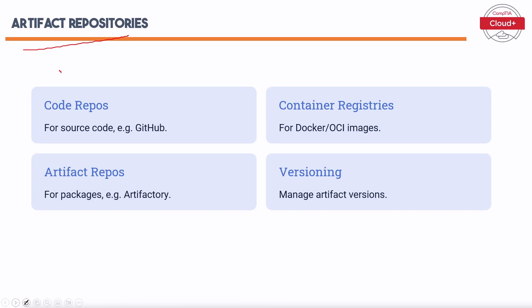Artifact repositories are used to store and manage different types of artifacts. The main types are: Code Repos — for source code, such as GitHub, managing version control. Container Registries — for Docker and OCI images, such as Docker Hub, storing container images for deployment. Artifact Repos — for packages, such as Artifactory, managing software package versions and dependencies. Versioning — managing artifact versions ensures correct artifacts are used and tracked throughout the development lifecycle.